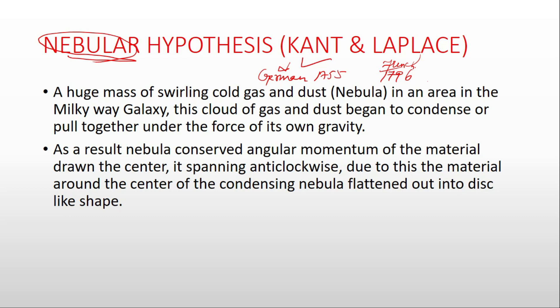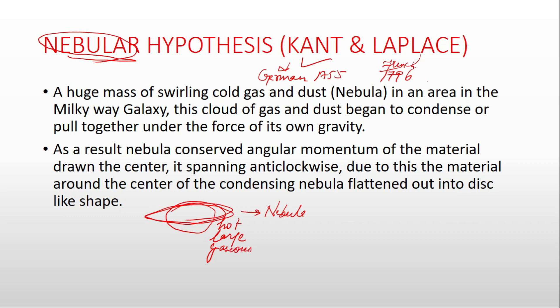This hypothesis suggests that the sun and planets, including the Earth, were formed from a disc-shaped rotating nebula — a vast cloud of hot gases. So the solar system, the sun, and the planets were all formed from this hot, vast, disc-shaped gaseous cloud called a nebula.